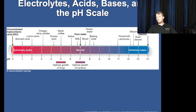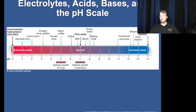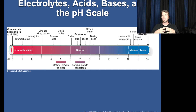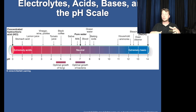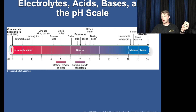Notice that fungi like more acidic environments whereas bacteria like a more neutral environment. This is one reason we worry about blood pH — if it becomes too acidic, it becomes too optimal for bacteria to grow, as they like a more acidic environment.